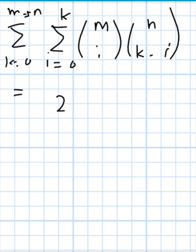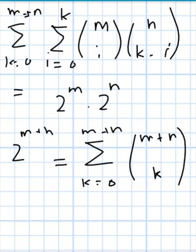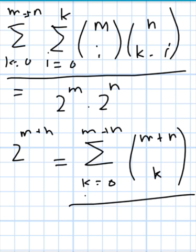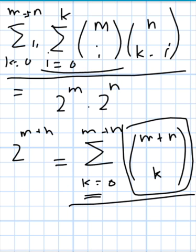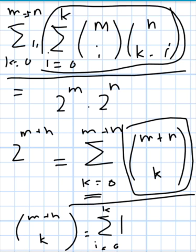This is the final form of 2^m times 2^n. Now for the right-hand side, 2^(m+n) expands directly as the sum from k equals 0 to m+n of (m+n)-choose-k. Comparing the two expressions, both sums run from k equals 0 to m+n, so we can conclude that (m+n)-choose-k equals the sum from i equals 0 to k of m-choose-i times n-choose-(k minus i). This completes the proof of the Vandermonde identity.